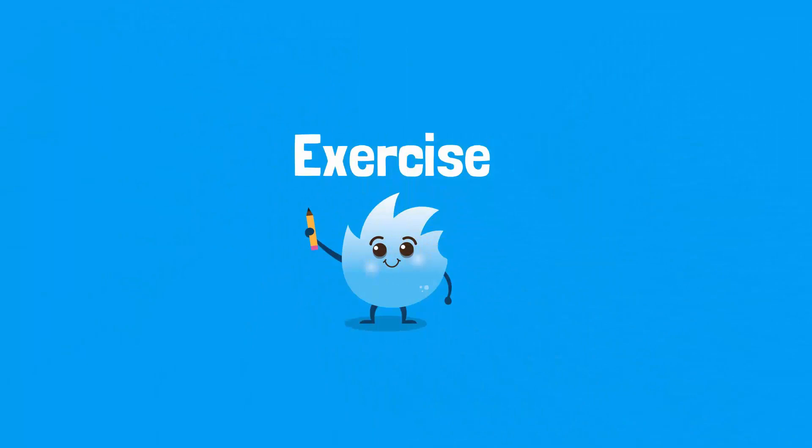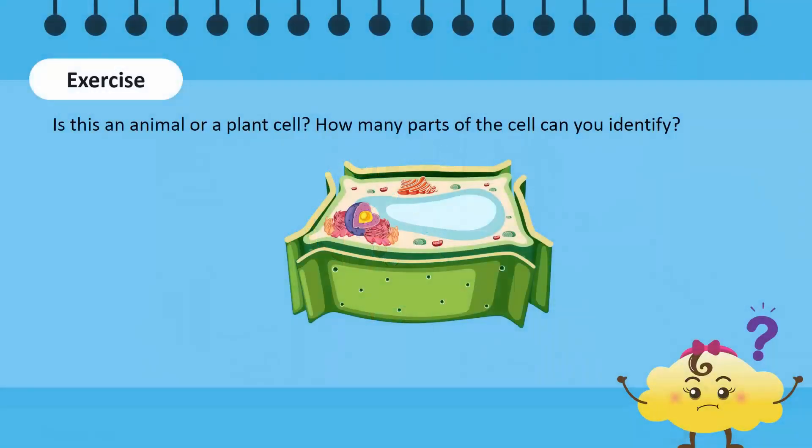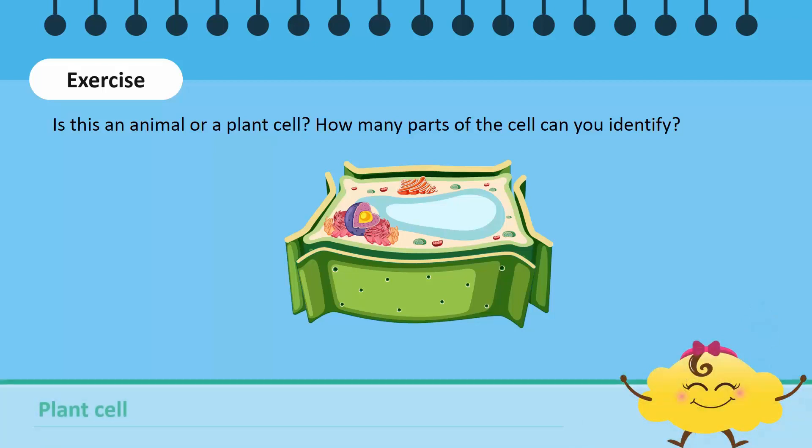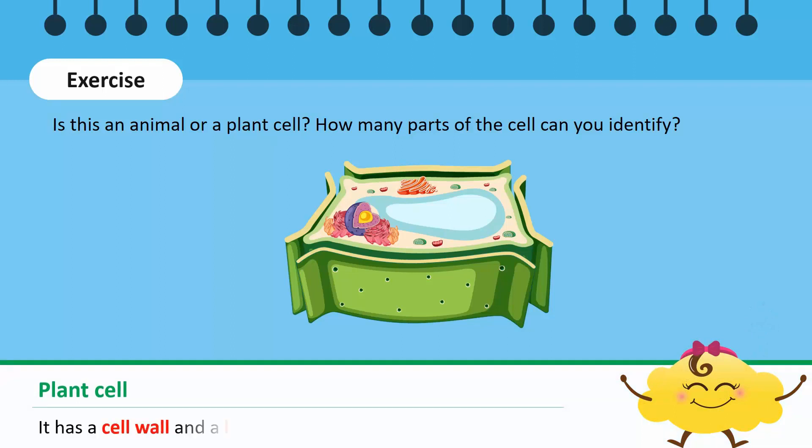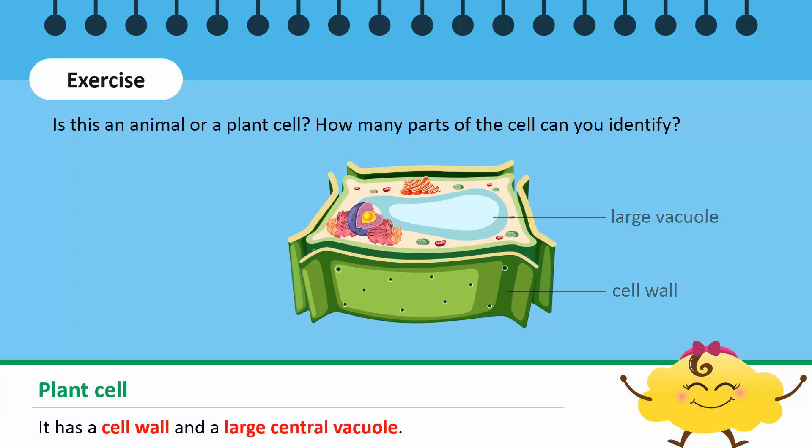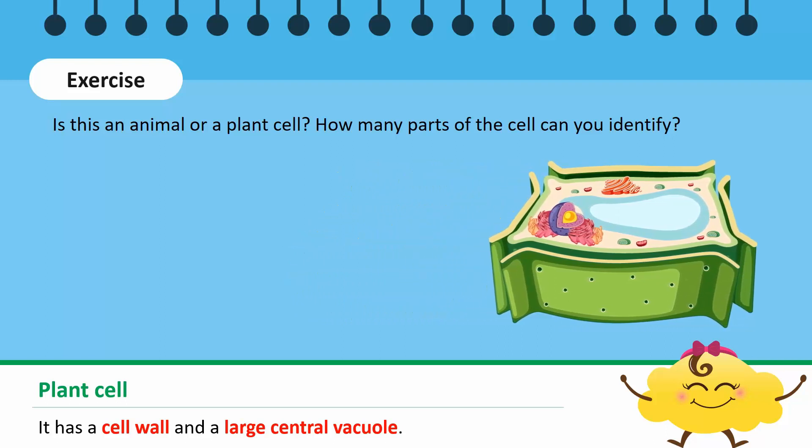Let's do a short exercise. Is this an animal or a plant cell? How many parts of the cell can you identify? This is a plant cell because it has a cell wall and a large central vacuole. Cell wall, cell membrane, vacuole, nucleus, chloroplasts, mitochondria, endoplasmic reticulum, and Golgi bodies are important cell organelles.